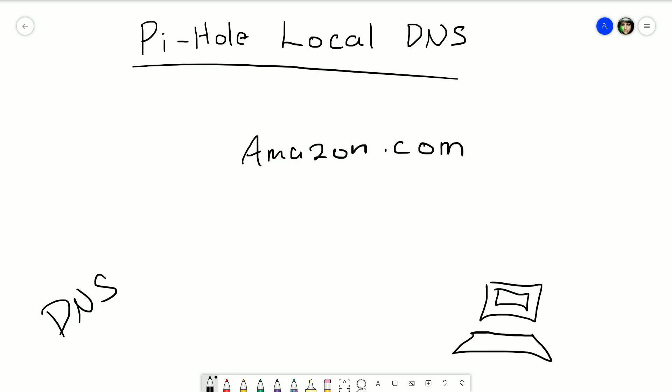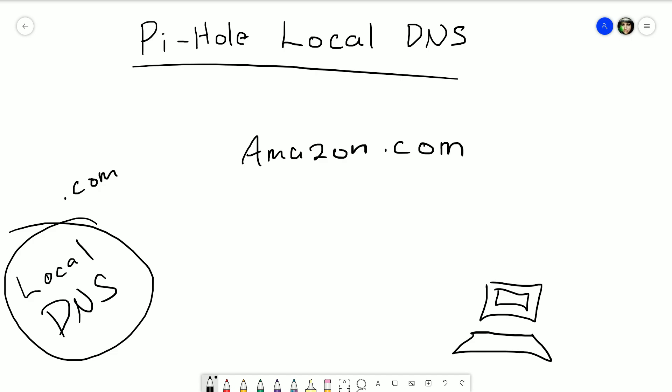A local record is just one that's local to your network. If you run your own DNS server, you can manage your own records and they only apply to you. Technically you can make this whatever you want, but there are generally some safe-to-use local domains. For example, you could designate your local domain as .com, but then don't be surprised when you can't get to anything on the internet with a .com domain.